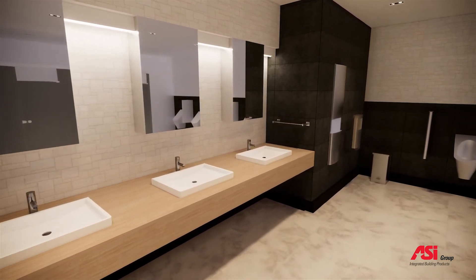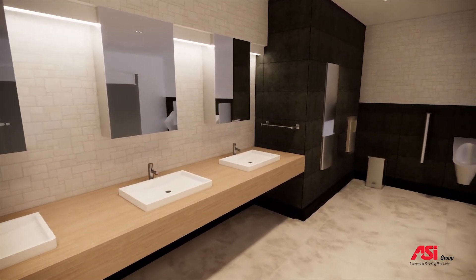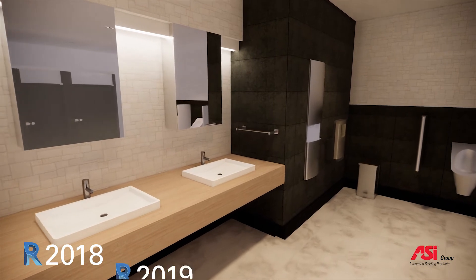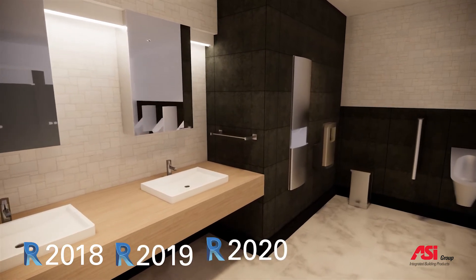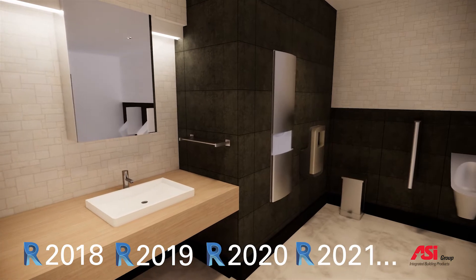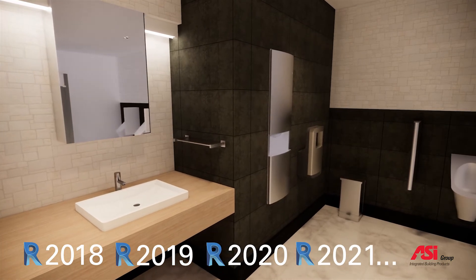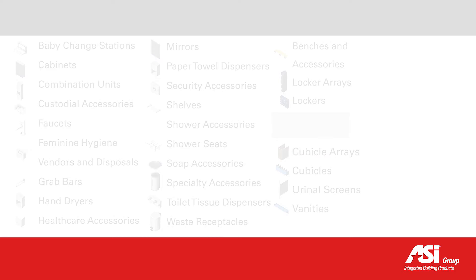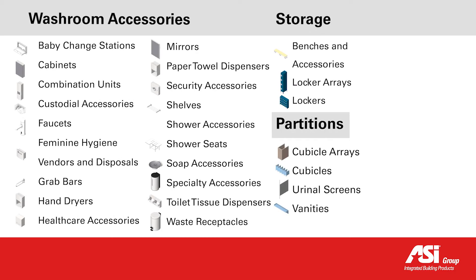Created using imperial units of measure, all ASI Revit families and showrooms are available in Revit 2018 and have been upgraded to all subsequent versions for your convenience. The ASI Library has been structured to provide a balance between content functionality and complexity, making the ASI Library easy to browse, manage and use within projects.